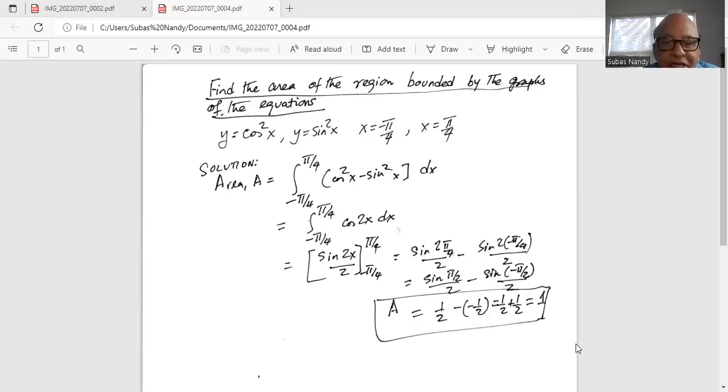Now integration of cosine 2x dx is sine 2x by 2. The 2 in the denominator comes from the coefficient of x which is 2. By the laws of integration it is half, it becomes a half, it's divided by 2.